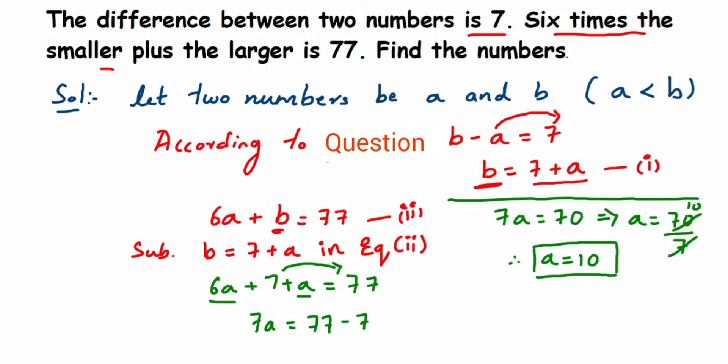Now to get the b value, we're going to use equation 1. That is, b is equal to 7 plus a. Since b is equal to 7 plus a and we know the a value is 10, so 7 plus 10 will be equal to 17. Therefore, b is equal to 17 and a is equal to 10.